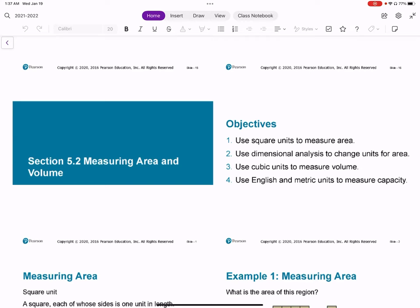Hi, welcome back. This is 5.2, measuring area and volume. Our objectives are to use square units to measure area, use dimensional analysis to change units for area, use cubic units to measure volume, and use English and metric units to measure capacity.